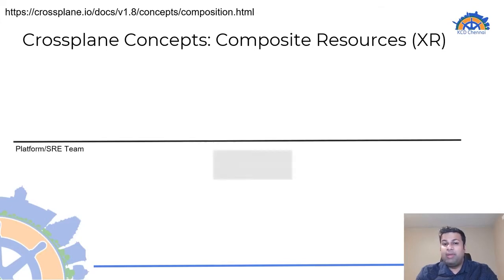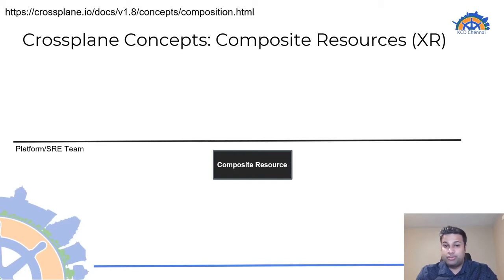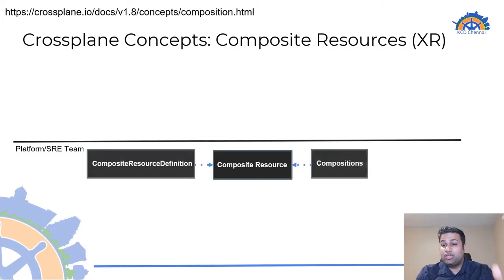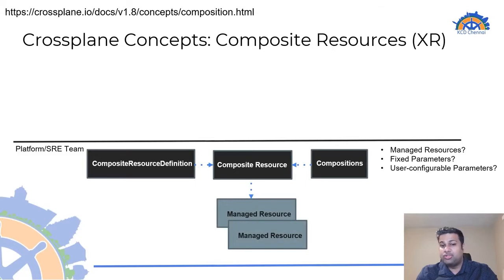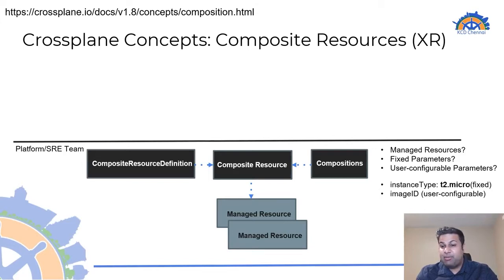Composite resources are configured by the platform or SRE team that manages Crossplane. While designing composite resources, they define which managed resources should be created. This is done using another Crossplane-specific resource called a Composite Resource Definition, or XRD, and Compositions. The XRDs and Compositions define which managed resources should be created, which parameters should be fixed, and which should be user-configurable. For example, it can be enforced that the instance type of an EC2 instance always be set to t2.micro, but the imageID can be configurable by the consumer.